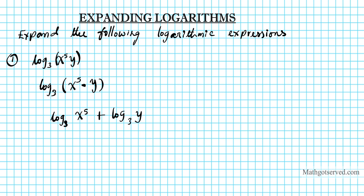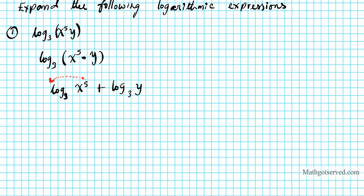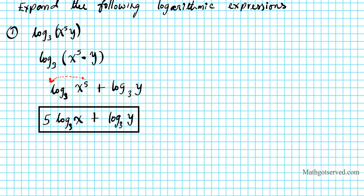Now I can also expand this further. There's a power here, so I can use the power property. The power property of logarithms brings the exponent down as a coefficient. So it becomes five times log base three of x plus log base three of y. There goes the expanded form for number one.